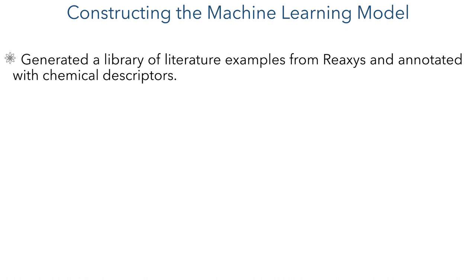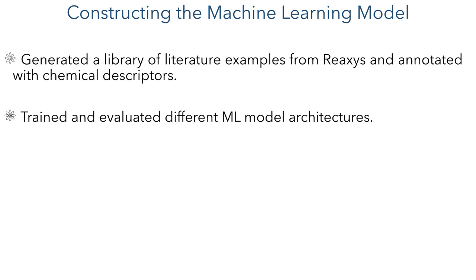To generate the machine learning models, they first generated a library of similar reactions taken from Reaxys and then annotated them with chemical descriptors generated by DFT studies. They then trained a range of different machine learning architectures on this library and evaluated their ability to accurately predict reaction yields.